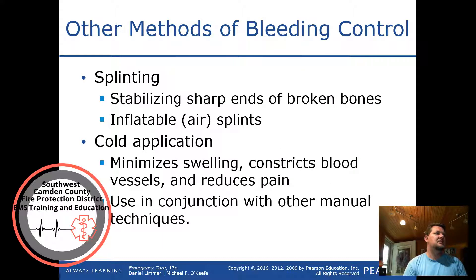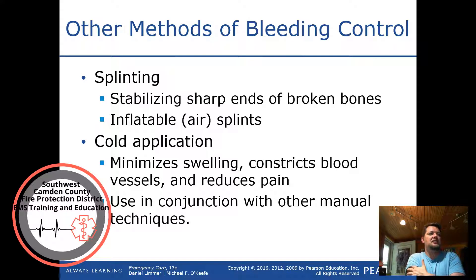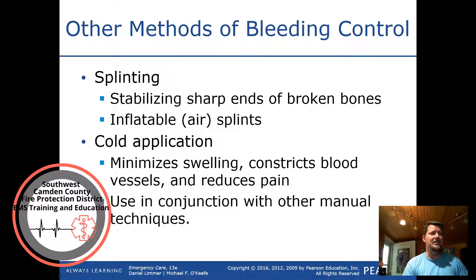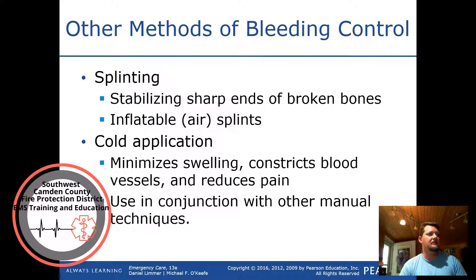Splinting stabilizes sharp ends of broken bones. Cold application minimizes swelling, constricts blood vessels, and reduces pain — it is used in conjunction with other manual techniques. For example, if an IV blows on a patient on blood thinners and they bleed significantly, placing a cold pack on the site can help reduce that bleeding.